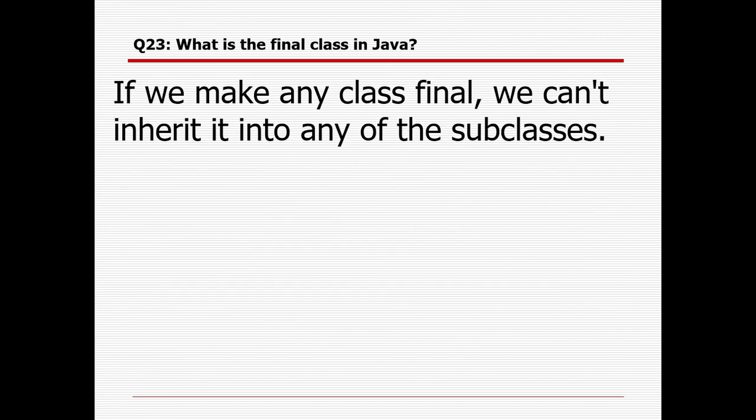What is the final class in Java? The final keyword, when declared for any variable, means its value cannot be changed. Similarly, for classes, if we declare a class as final by placing the keyword before the class name, that class cannot be inherited into any subclasses.